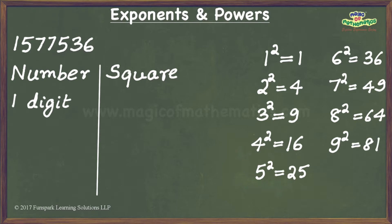As we can see, the square of single-digit numbers have either one digit, as in the case of one-squared, two-squared, and three-squared, or two digits, as in the case of the rest of the squares. Hence, we can say that when a number has one digit, its square has either one or two digits.